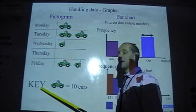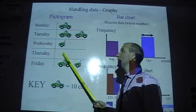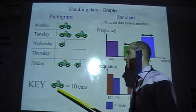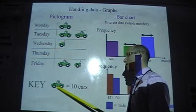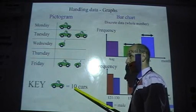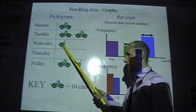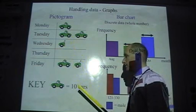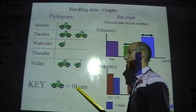Another thing people forget is the key. Without a key, the whole pictogram is meaningless. Here, my key is one picture of a car is equivalent to 10 cars. So half is equivalent to five.